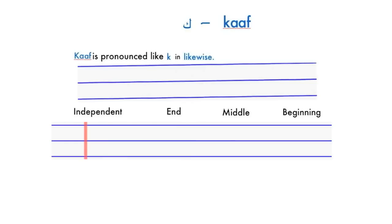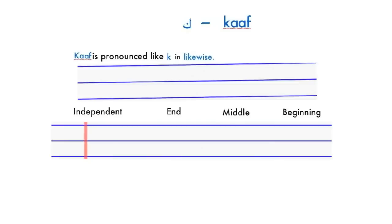The letter Kaf is pronounced like K in the word 'likewise.' In the beginning, we write it like this, and it connects to the letter which comes after it. One example would be the word 'Kabir,' which means big.